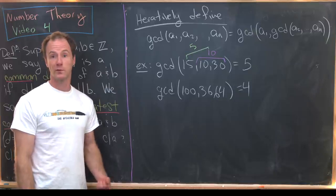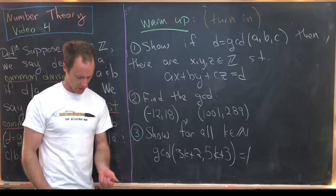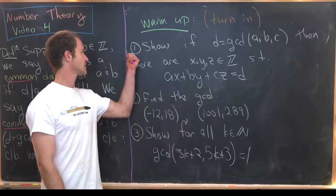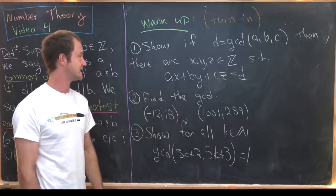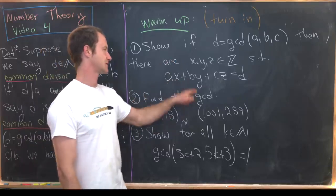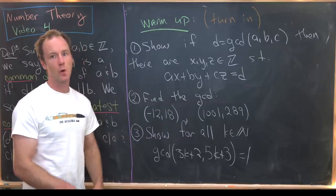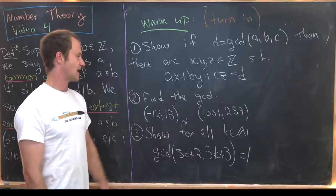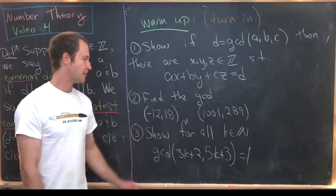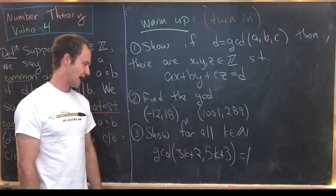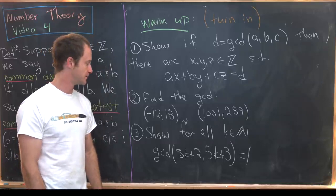Let's finish this video with some warmup problems. First, show that if D equals the GCD of a, b, and c, then there are integers x, y, and z such that ax plus by plus cz equals D. Second, find the GCD of the pairs: negative 12 and 18, and 1001 and 289. Finally, show that for all natural numbers k, 3k plus 2 and 5k plus 3 are relatively prime — meaning their GCD equals 1.